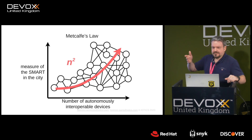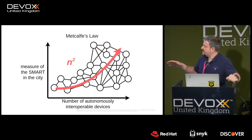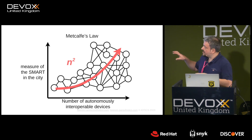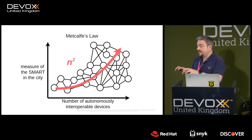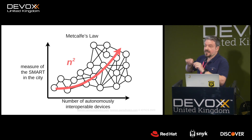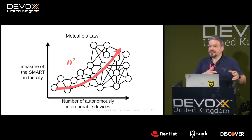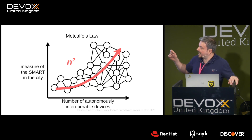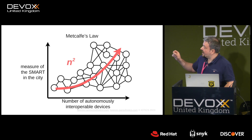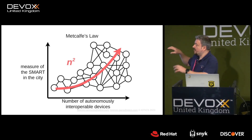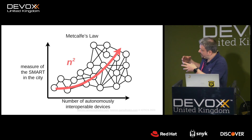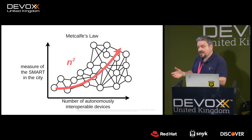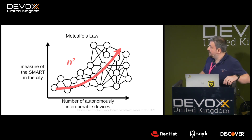This is captured in Metcalfe's Law — from the early 80s — which postulates that the value of a network is not the presence of each node but how each node can communicate with any other node. If there's a measure of how smart a city is, that number grows on the square of the number of devices in the city, on a quadratic curve.